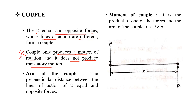If a couple produces motion in rotation, it will produce a translatory motion. The arm of the couple is the perpendicular distance between the two forces acting in the opposite direction. The moment of the couple is the product of one of the forces and the arm of the couple.